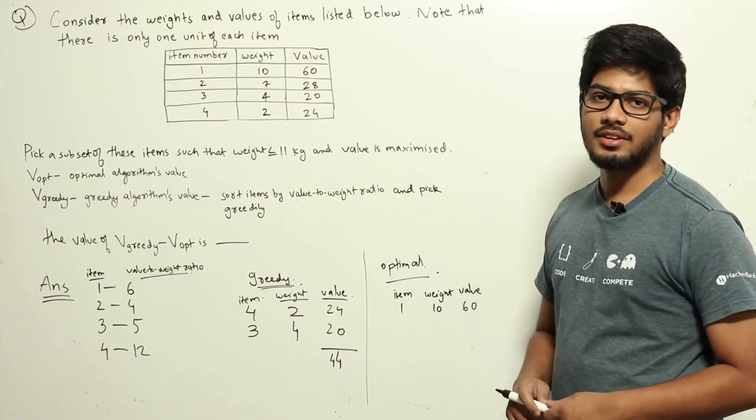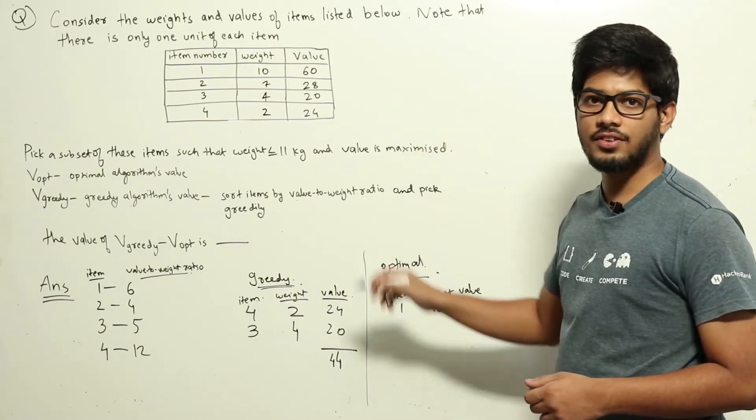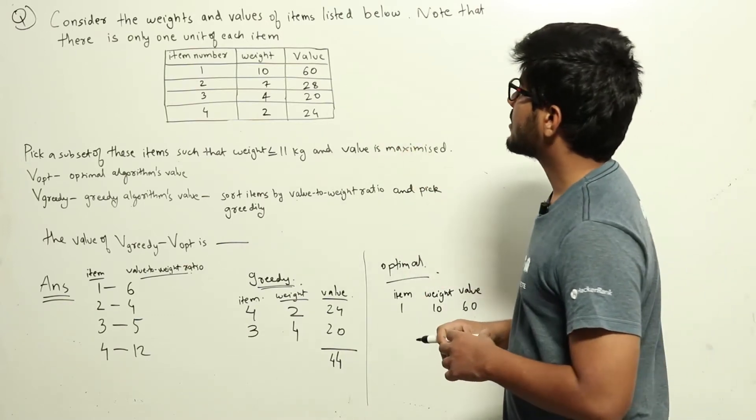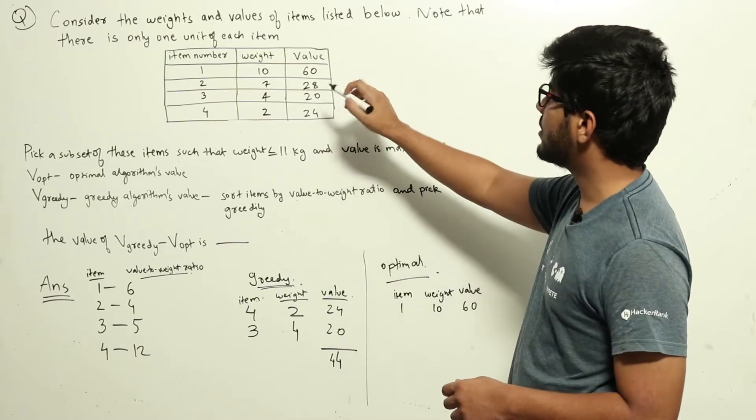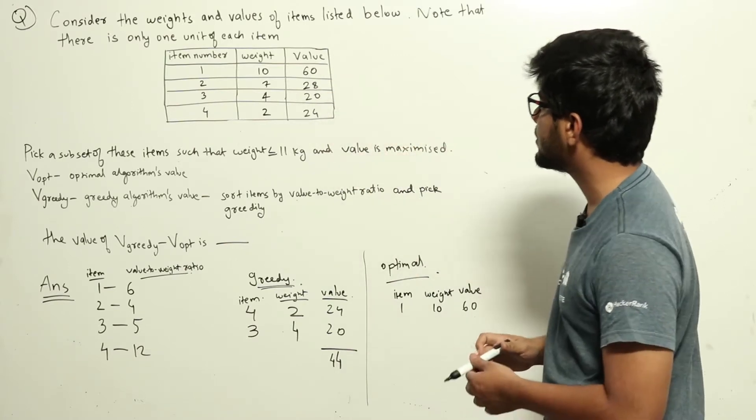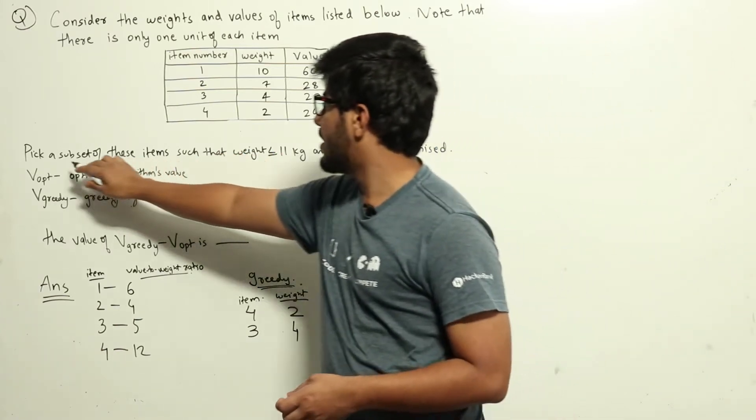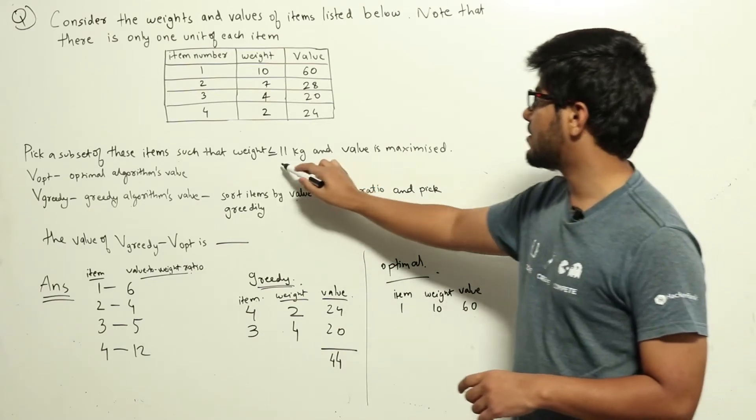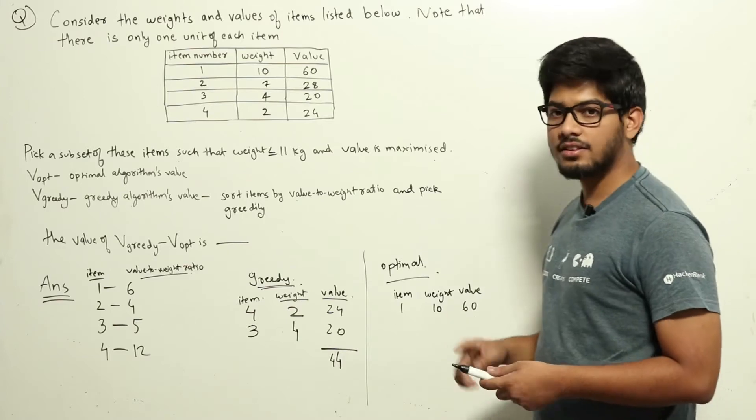This is a question from dynamic programming in the algorithm section. The question text was very large, so I have given the summary here. Consider the weights and values of items listed below. Note that there is only one unit of each item, so this is a 0-1 knapsack problem. What we have to do here is pick a subset of these items such that the weight is less than or equal to 11 kg and the value is maximized.